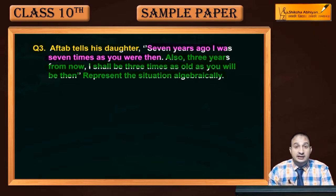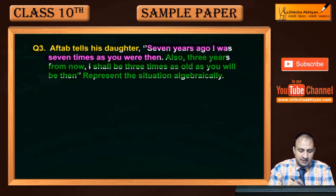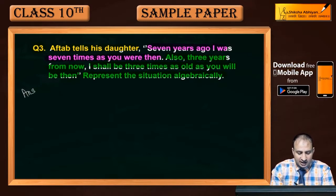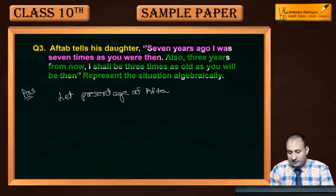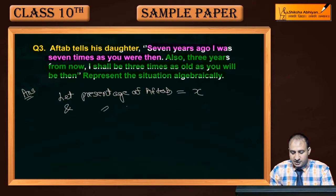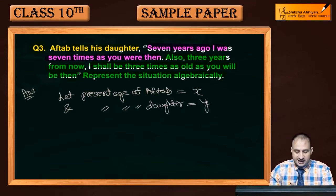यहाँ पर हम linear equation in two variables का use करेंगे। सबसे पहले present age assume कर लेते हैं। Let present age of Aftaab = x, and present age of daughter = y years। यह दोनों मैंने years के अंदर लिया।